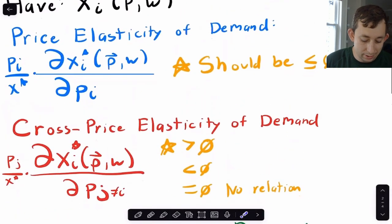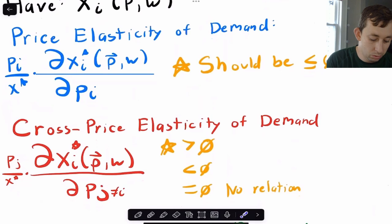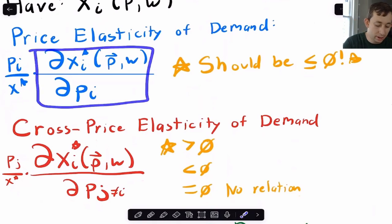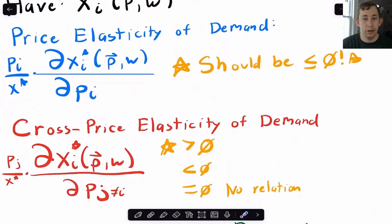Now for all of these elasticities, remember that it's the partial derivative of Marshallian demand with respect to whatever we're changing, and then you multiply by, for example, in price elasticity, pi over x star. But because prices are positive and generally Marshallian demand is also positive, what we really care about is the sign that we get, and the sign is completely determined by this partial derivative. So that's what we're going to focus on.